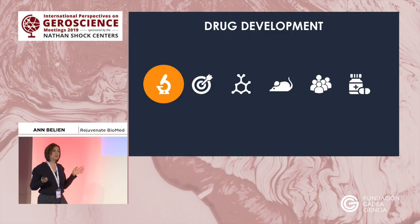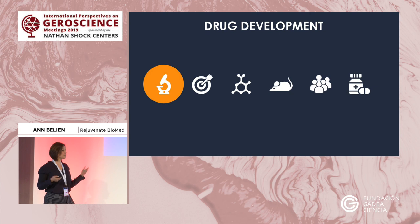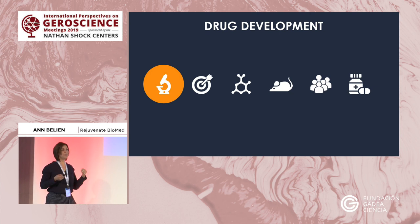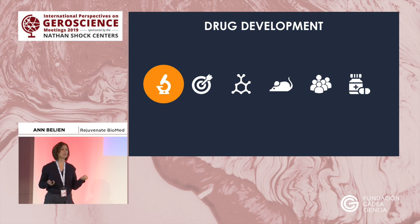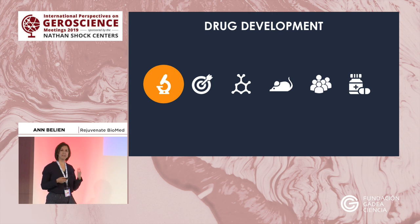Traditionally, if you do drug development, you start in the lab: you define the target which is important for your disease, you look for a compound that can interact with that specific target, you confirm in animal models that it works, then you move to the clinic and do your clinical trials to make your compound ready to go to market. That's one way of doing drug development.